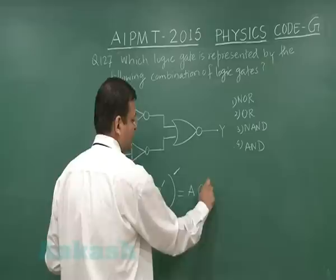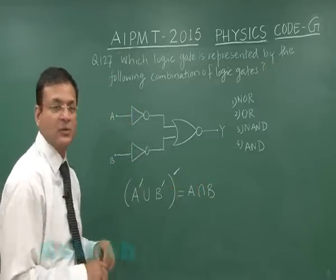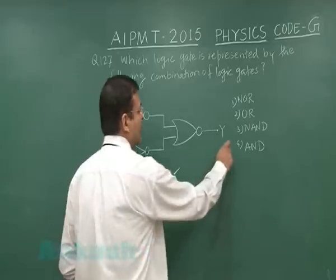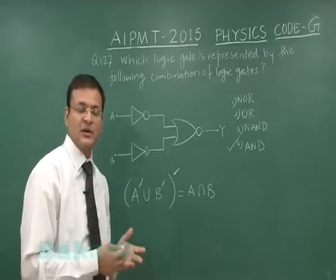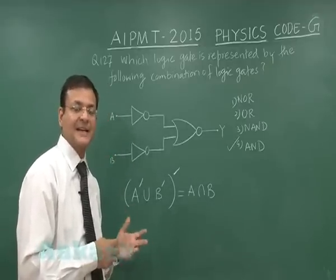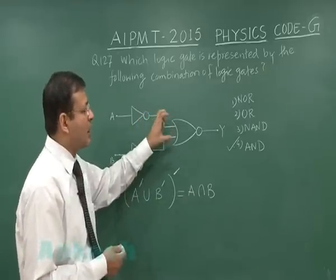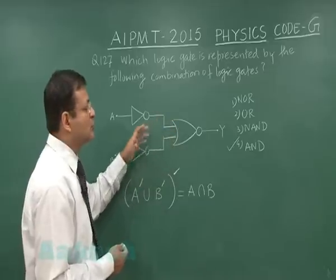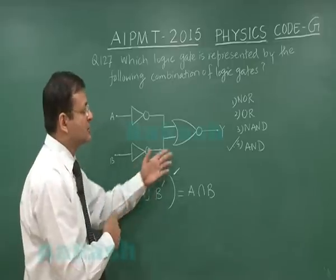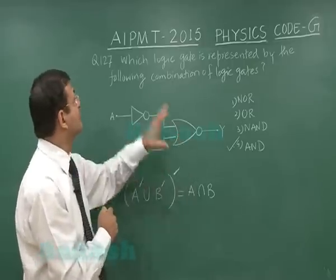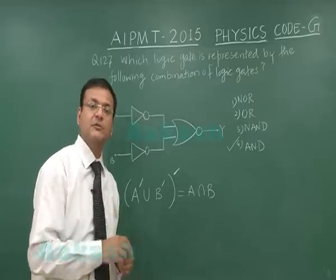A dash union b dash. So if you apply this De Morgan's law then that makes it a intersection b, or you can say a AND b. So ultimately it will function as AND gate. You can also say this is an application of various NOR gates. As you have studied, various NOR gates or NAND gates are universal gates and you can form any other gate. So if you look at the circuit of how NOR gates are being used to make AND gate, you will find this kind of similar circuit is given there. So this is the standard answer: AND gate. And fourth option will be the correct option for question number 127.